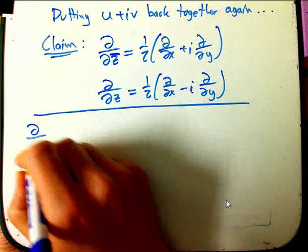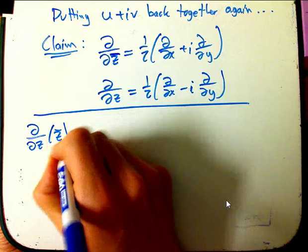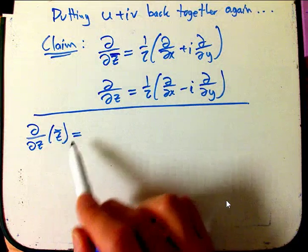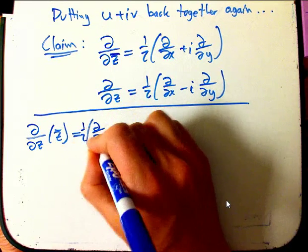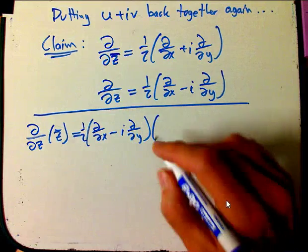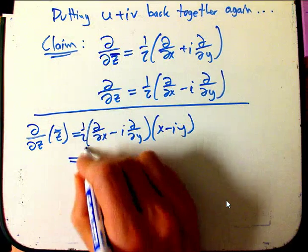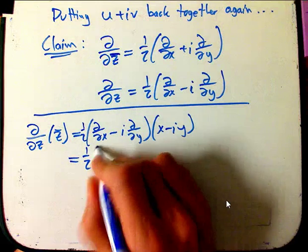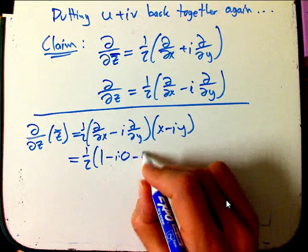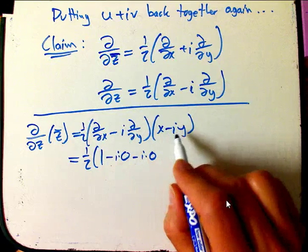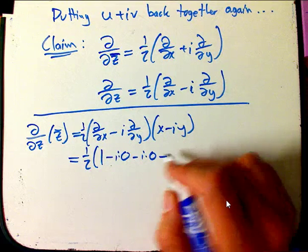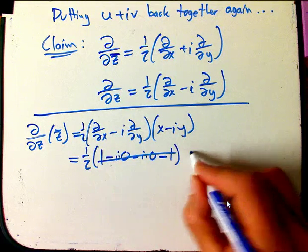There's four calculations we would want to do. For example, d by dz of z bar. If we're really thinking of these as kind of new, alternate independent variables, these should be zero, because it's like d by dx of y. And it's pretty easy to set this up. This is one half by my definition above, and this will go a long way to justifying that. And then z bar is x minus iy. I get the one-half. d by dx of x is one. d by dy of x is zero, so minus i times zero. d by dx of y is also zero, so minus i times zero. And then minus i times minus i. What is that? Well, i squared is minus one, and then two minuses, so it's minus, and then d by dy of y is one. Aha! These all cancel, and you get zero, as advertised.